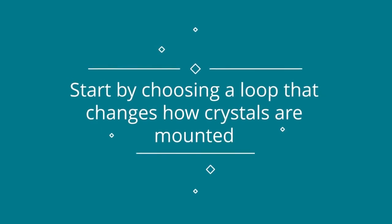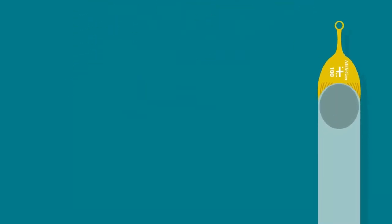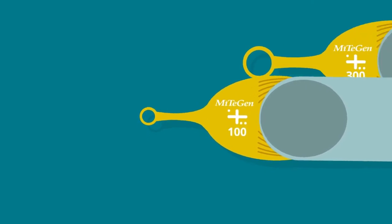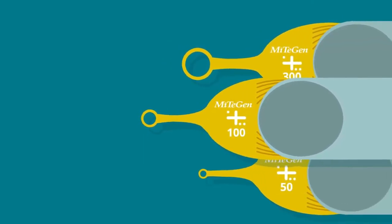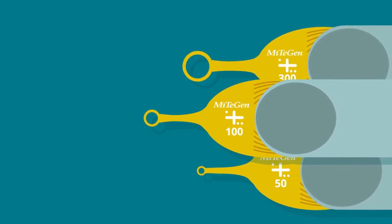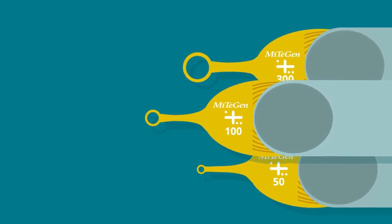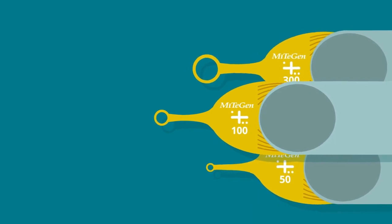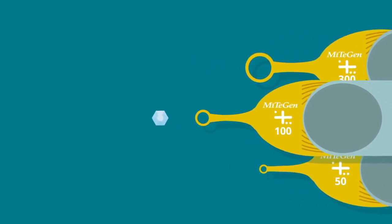They start by choosing a loop that changes how crystals are mounted. Mitogen's patented family of micromounts and micro-loops are manufactured from a highly X-ray transparent polymer into precise shapes and sizes using cutting-edge photolithography techniques. These X-ray transparent loops can go directly into the beam.